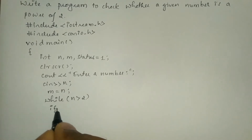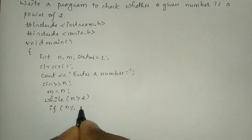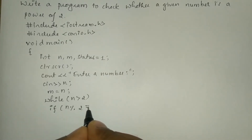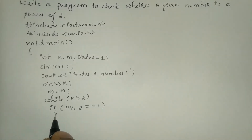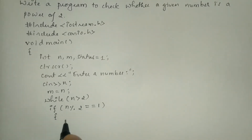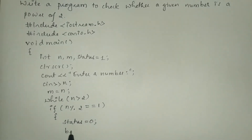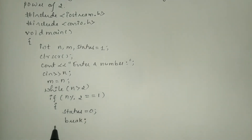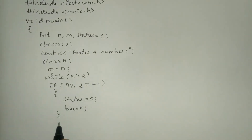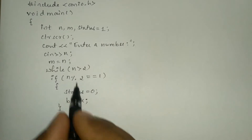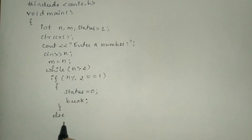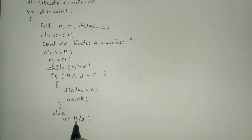Next we will check the condition: if n modulo 2 — this always gives us the remainder after dividing by 2. If it is equal to 1, then the control enters the body of this if and changes the status value to 0. So earlier it was 1, now it becomes 0, and we forcibly bring the control out of this while loop with a closing brace. If this condition is false, the else part executes: n is equal to n integer division by 2, which always gives us the quotient.